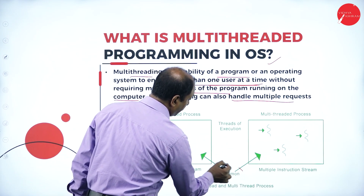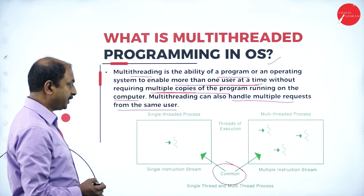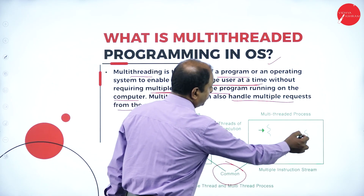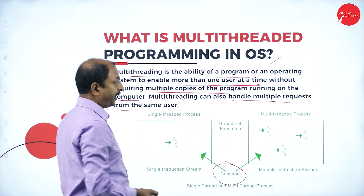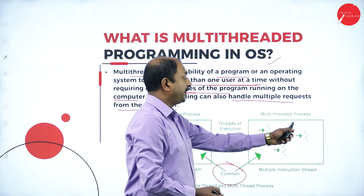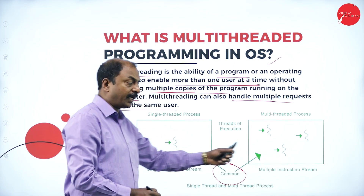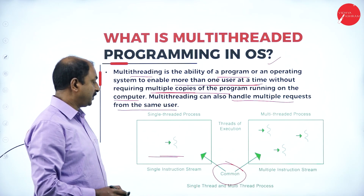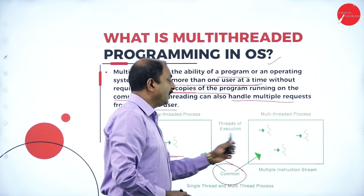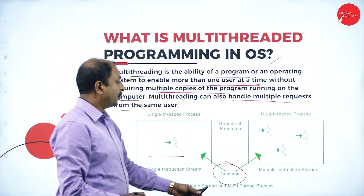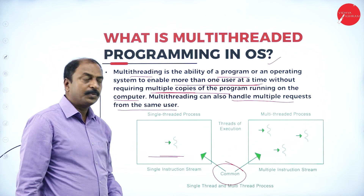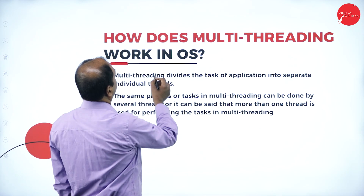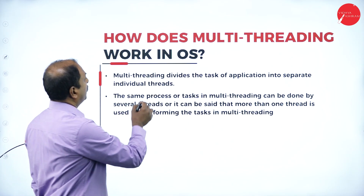Looking at the diagram, this is the common program or process shared by multiple threads. In the multi-threading example there are three threads in a program or process, while a single-thread process has only one thread. All these threads share a common program or process — that is the concept of multi-threaded programming in an operating system.